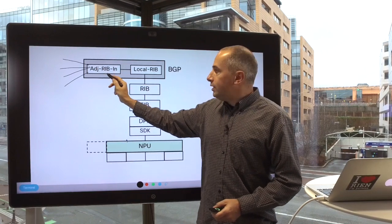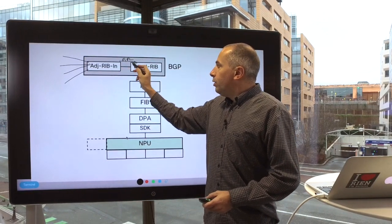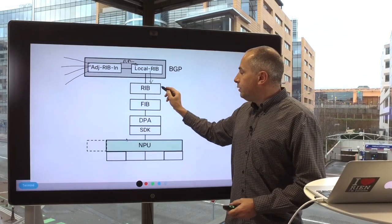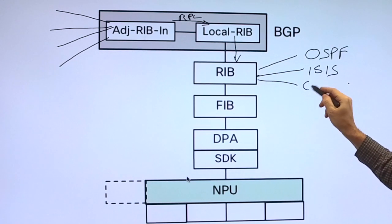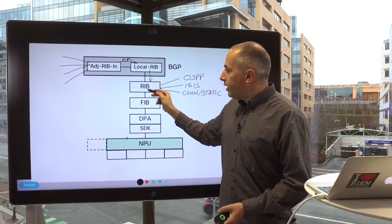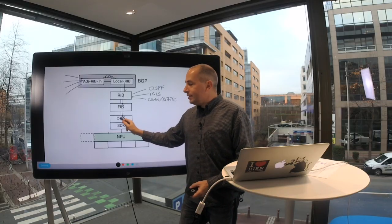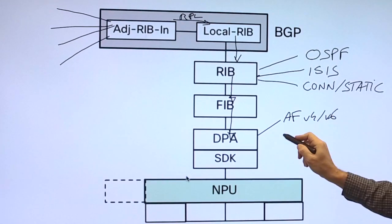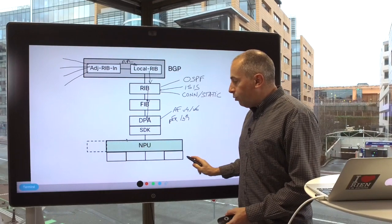All this information is installed inside what we call the Edge RIB. This memory will be after the RPL application. This information then goes into the local RIB, and finally the local RIB will populate the routing information base. This base is also populated with other protocols like OSPF, ISIS, or even connected and static routes. All these protocols or sources will populate the RIB, which then passes route information to the FIB and to what we call the DPA — the Data Plane Agent. This Data Plane Agent will use address family, V4 and V6.